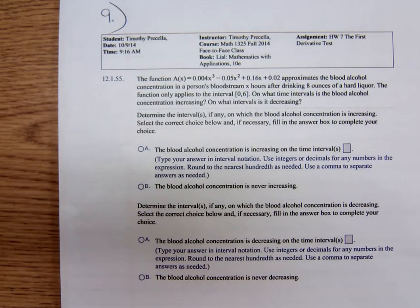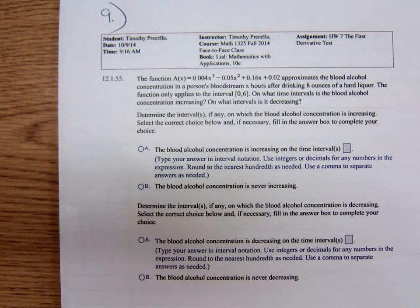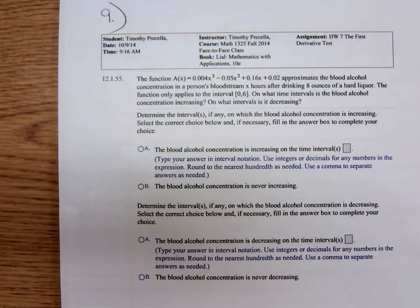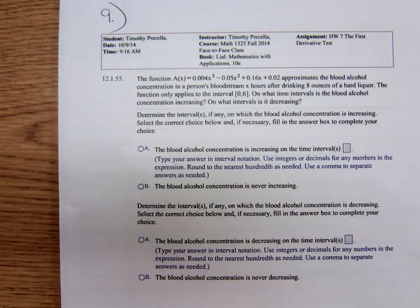This is one that some of y'all can relate to. The function A(x) = 0.004x³ - 0.05x² + 0.16x + 0.02 approximates the blood alcohol concentration in a person's bloodstream x hours after drinking eight ounces of hard liquor. The function only applies to the interval from zero to six.